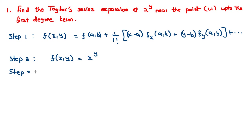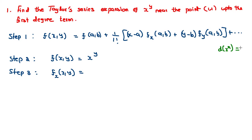Step 3: find fx(x,y), that is differentiation of f with respect to x treating y as constant. Here y is constant, so we use the formula for x to the power n: differentiation of x to the power n is equal to n into x to the power n minus 1. We are going to use that formula here.